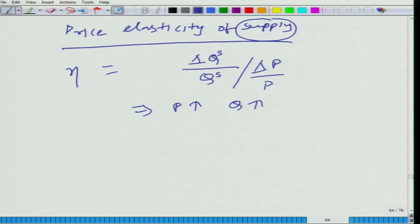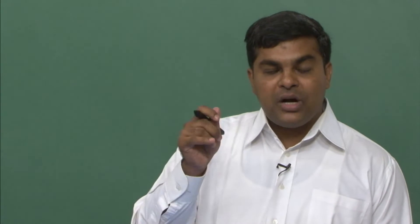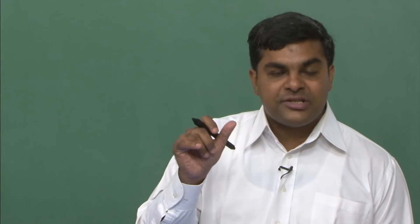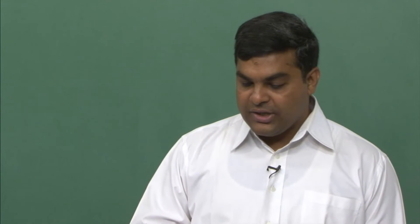So qualitatively we establish that the demand is a downward sloping curve, but we want to also understand the responsiveness, the proportional changes. Here P goes up, Q goes up, so eventually you will get it as positive.